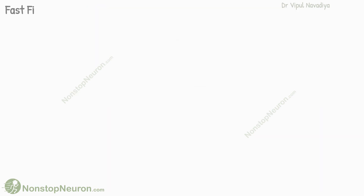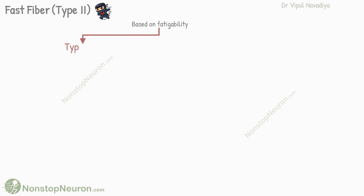Now let's talk about fast muscle fibers, or type 2 fibers. Based on fatigability, these fibers are further divided into type 2A and type 2X/2B fibers.